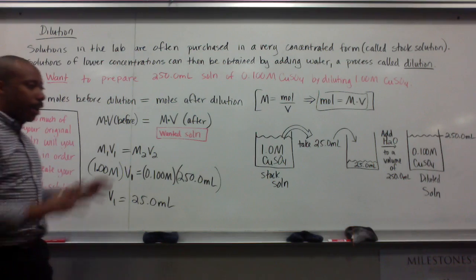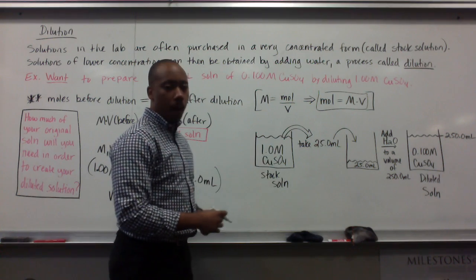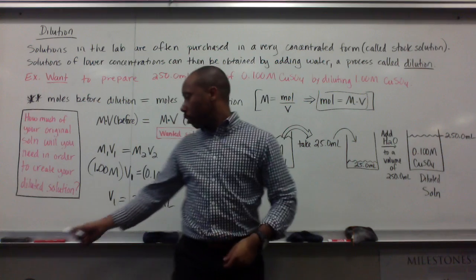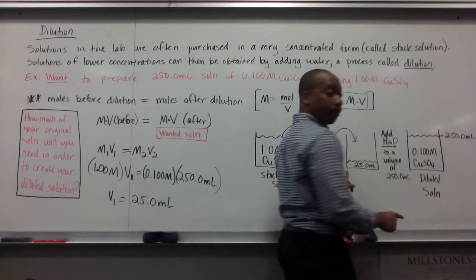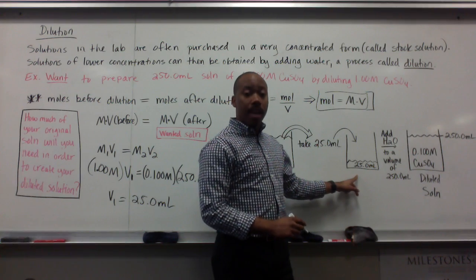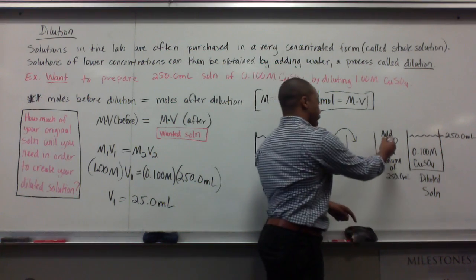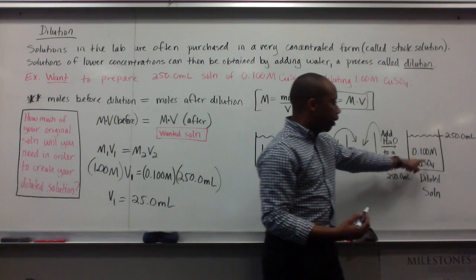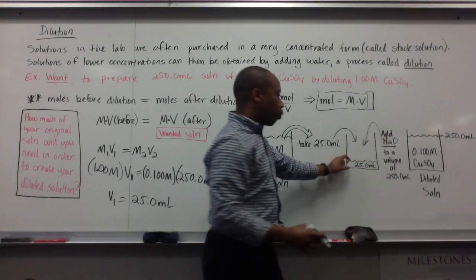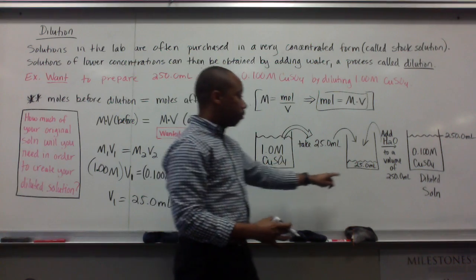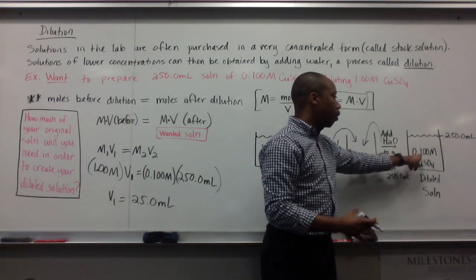What this means is this. Look at my drawing here. I start with my original stock solution of 1.0 molar copper 2 sulfate. I'm going to need to take out 25 milliliters of it, my stock solution, and put it in a separate container. And then I'm going to add water to a volume of 250 milliliters. At that point, I've taken the small amount of 25 milliliters, which has a concentration still of 1.0 molar, and I've added water to it in order to dilute it to a point where it now has a concentration of 0.100 molar.